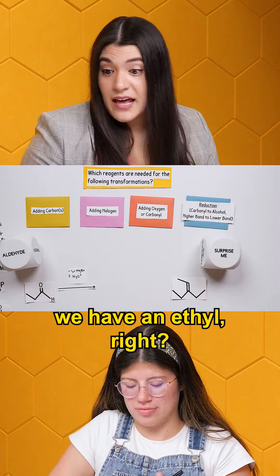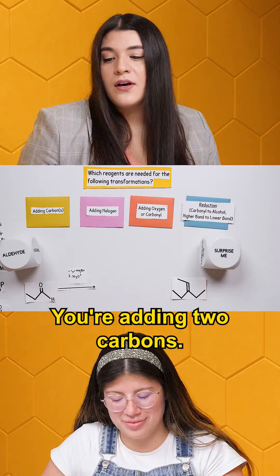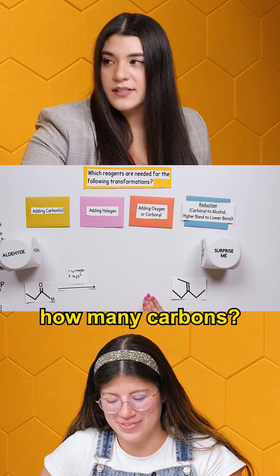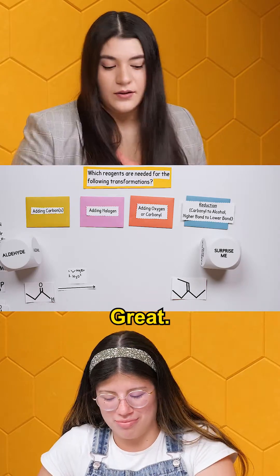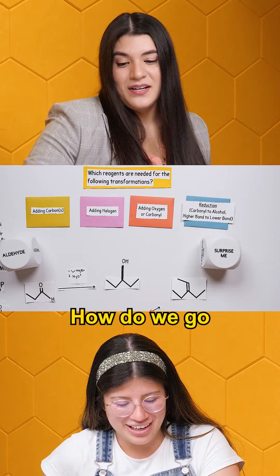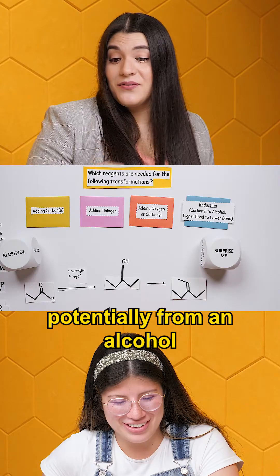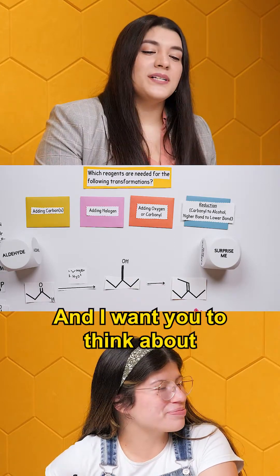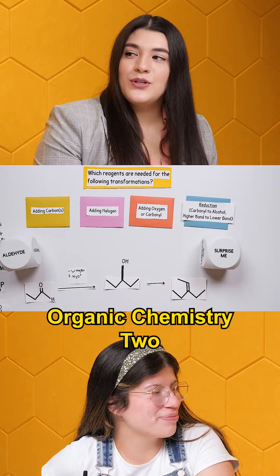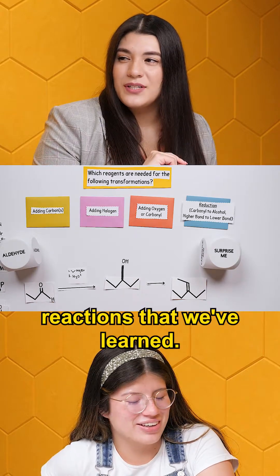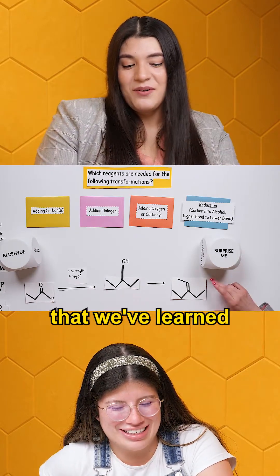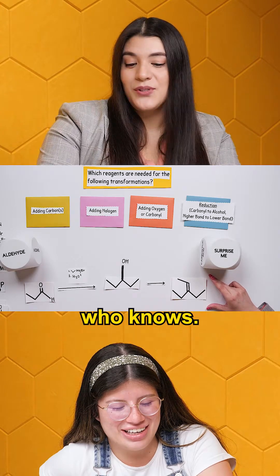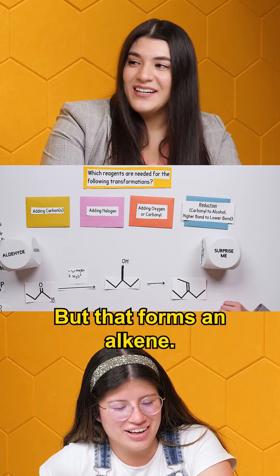We have an ethyl group — you're adding two carbons. In total we're going to have five carbons on the bottom. How do we go, potentially, from an alcohol to an alkene? Think about organic chemistry two reactions that we've learned — is there anything that forms an alkene, maybe with a middle step?